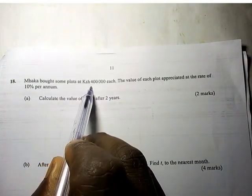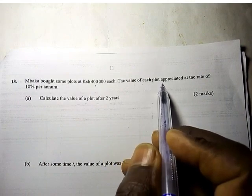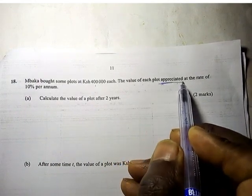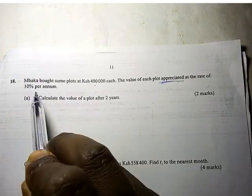Mbaka bought some plots at Kenya Shillings 400,000 each. The value of each plot appreciated at a rate of 10% per annum.